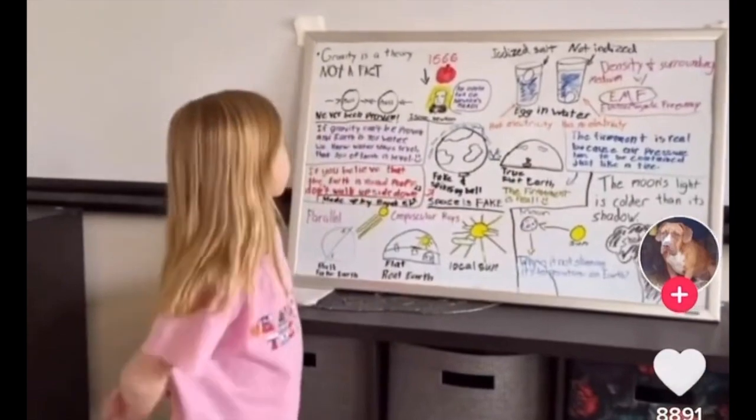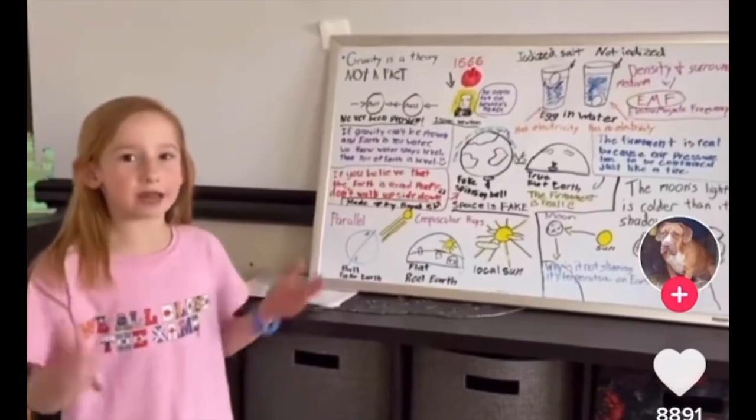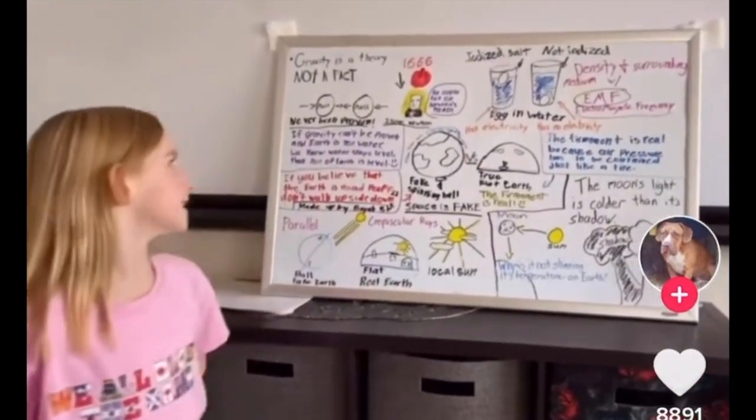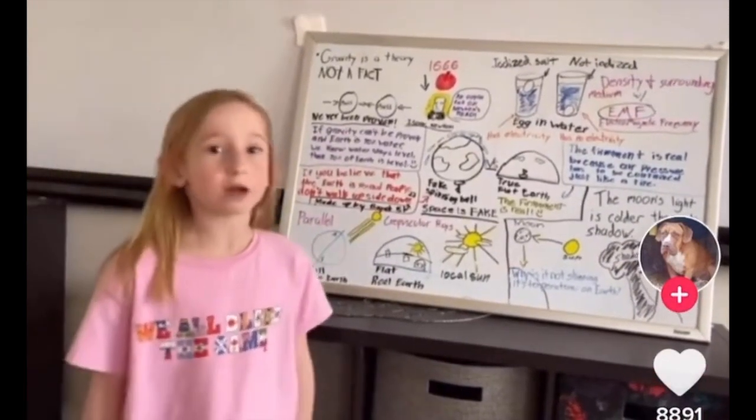So first we're going to start off with gravity. Gravity is a theory, not a fact. Mass attracting mass has never been proven properly. This happened in 1666, an apple fell on Isaac Newton's head. It must have been a big apple for him to believe in gravity.